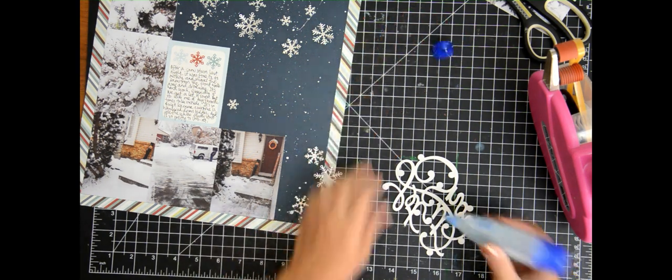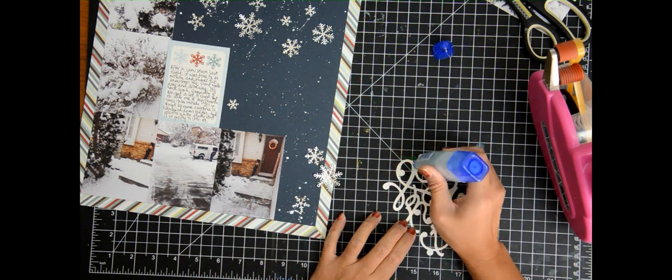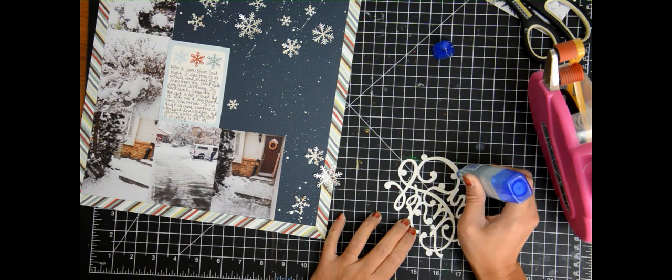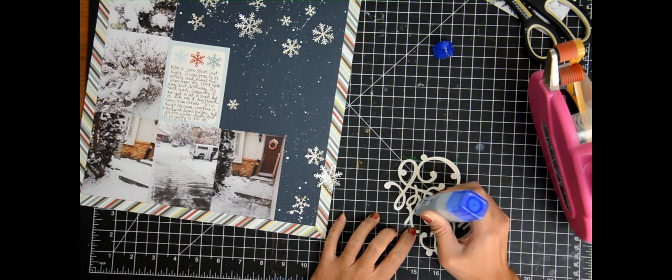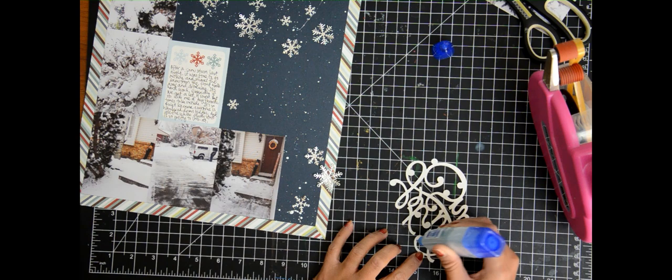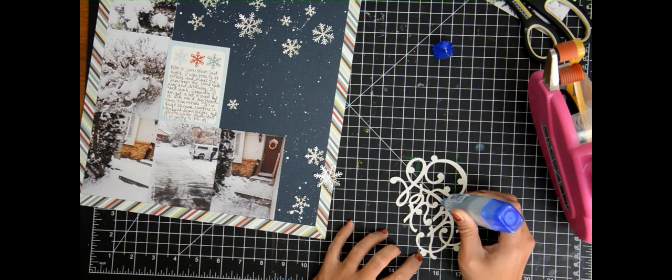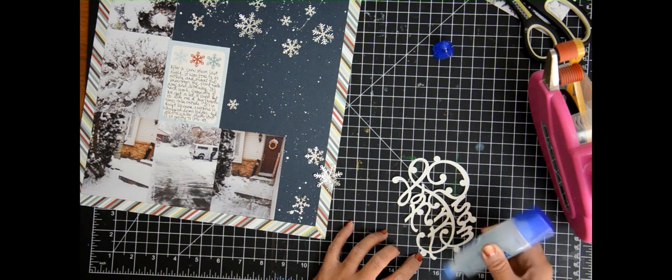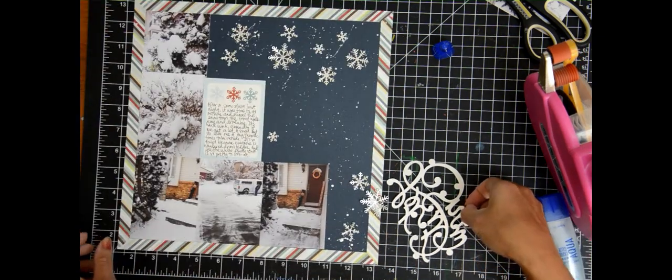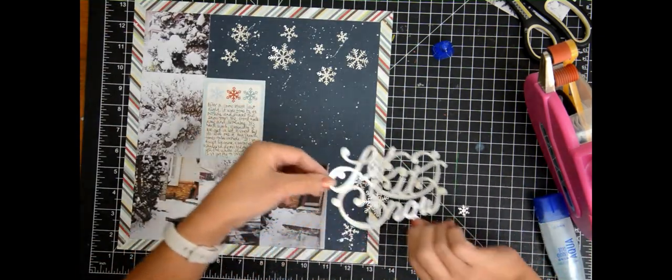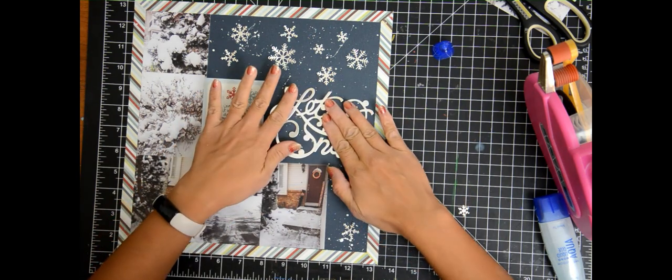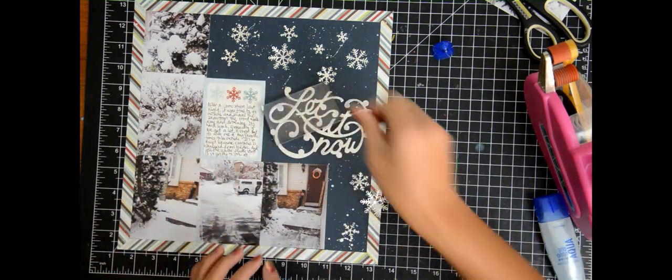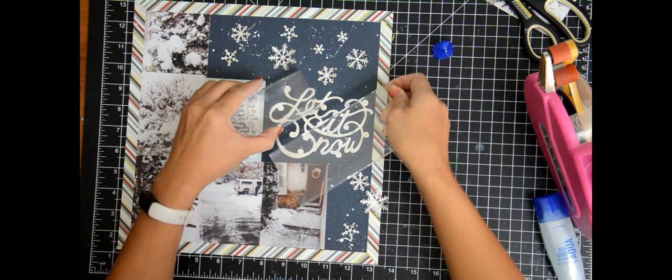Now another thing about this let it snow is that it's only a single cut. If I were to do this again, I would do what a lot of the card makers are doing now where they would cut two to four identical cuts and then lay them on top of each other to create that dimensional title. And I should have done that, but I was kind of lazy.